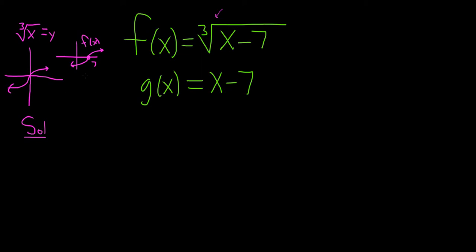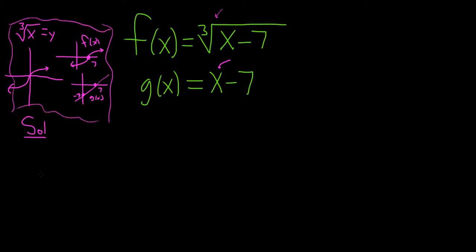g of x equals x minus 7 is a line with a positive slope, and it's also going to pass through 7, because if you plug in 7 you get 0. If you plug in 0 you get negative 7. We're going to give a better graph, but this is just so you have this in the back of your mind.